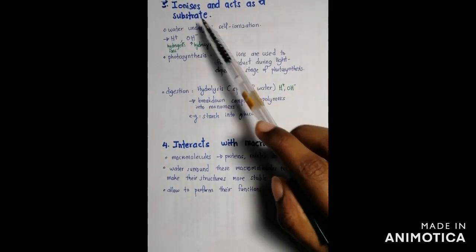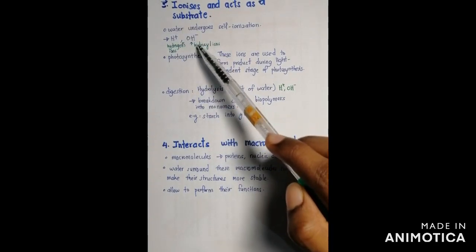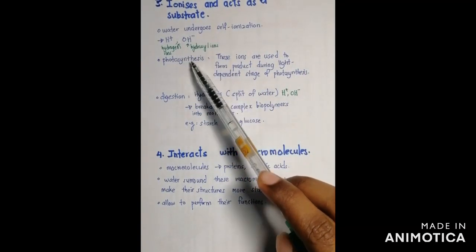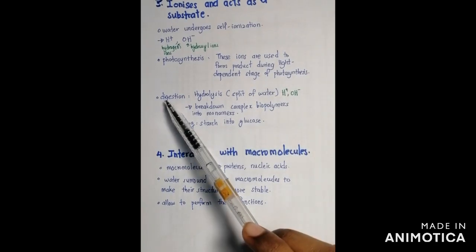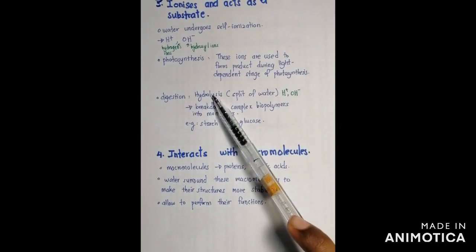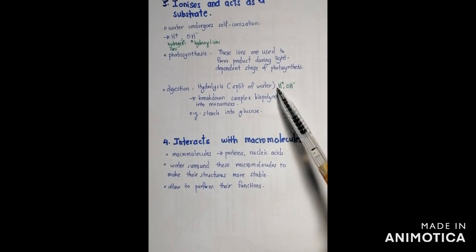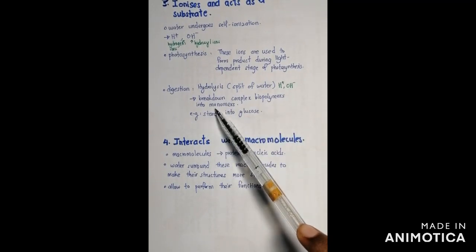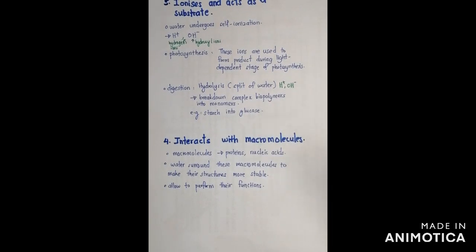Another chemical property is that water ionizes and acts as a substrate. Water can undergo self-ionization, breaking into hydrogen ions (H⁺) and hydroxyl ions (OH⁻). These ions help in photosynthesis — they are used during the light-dependent stage of photosynthesis. Water also helps in digestion through the process of hydrolysis — the splitting of water — where water breaks down complex biopolymers into monomers, for example breaking starch into glucose.